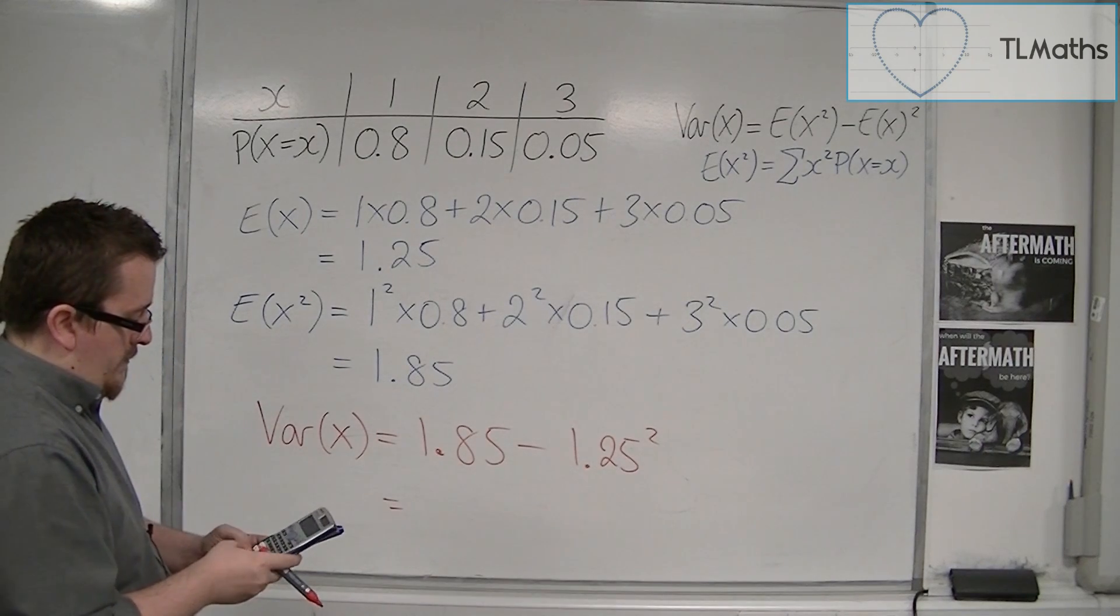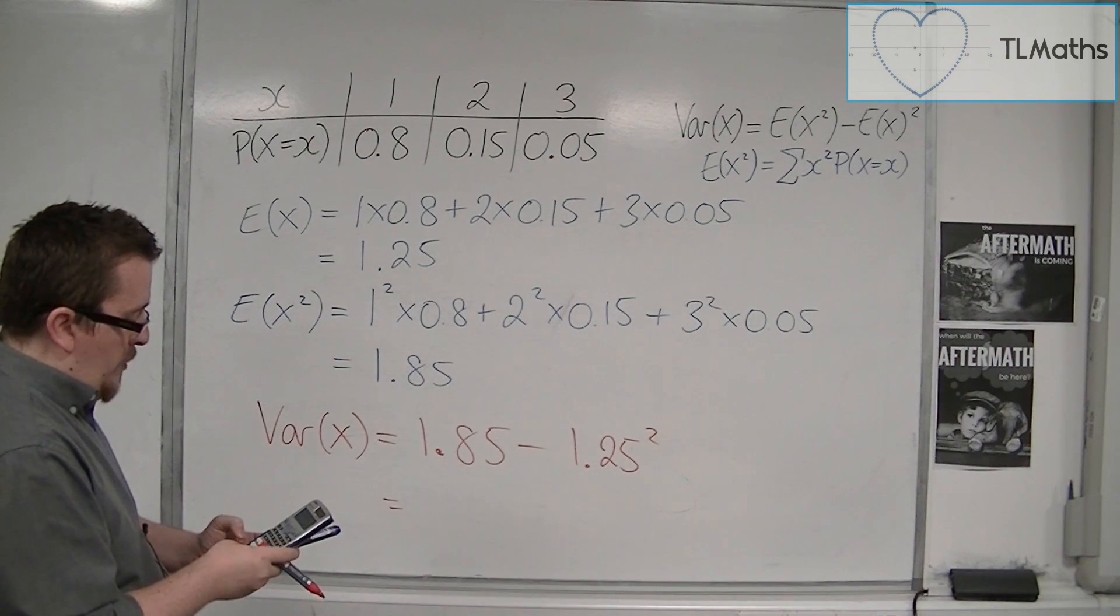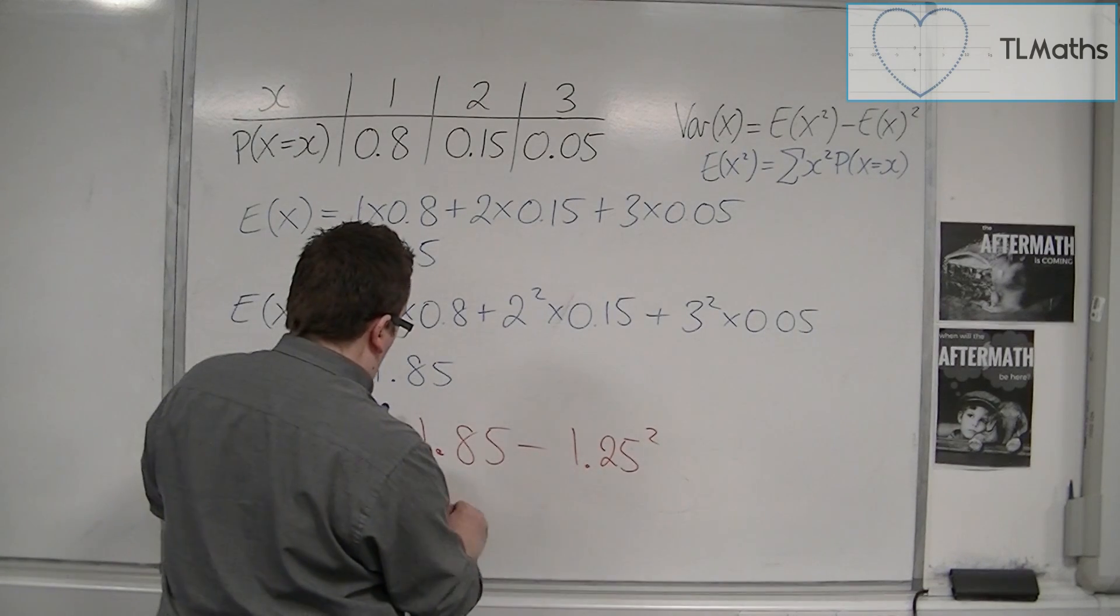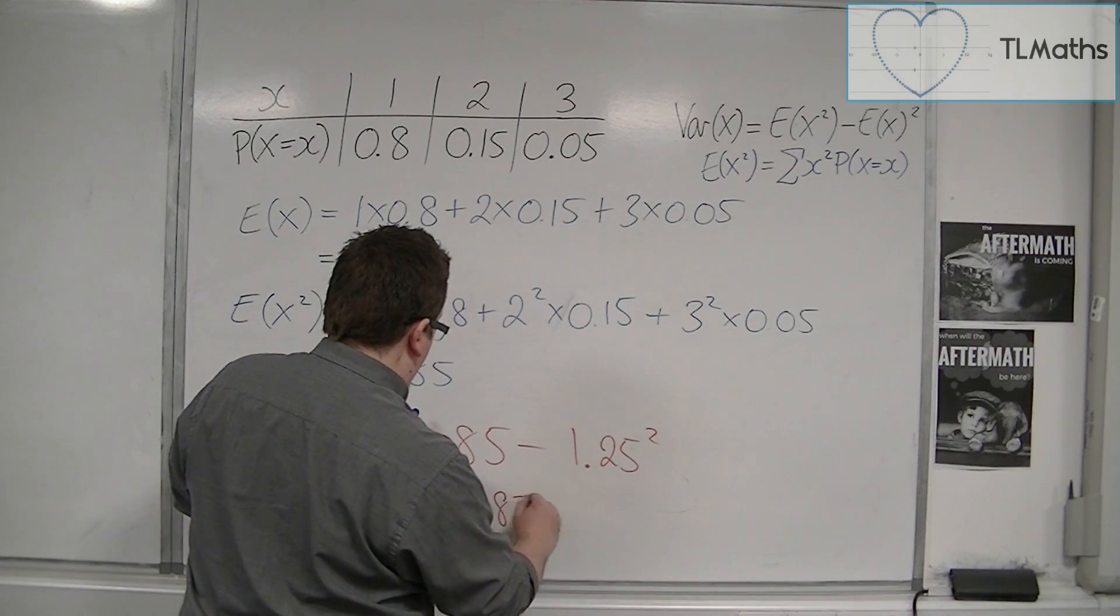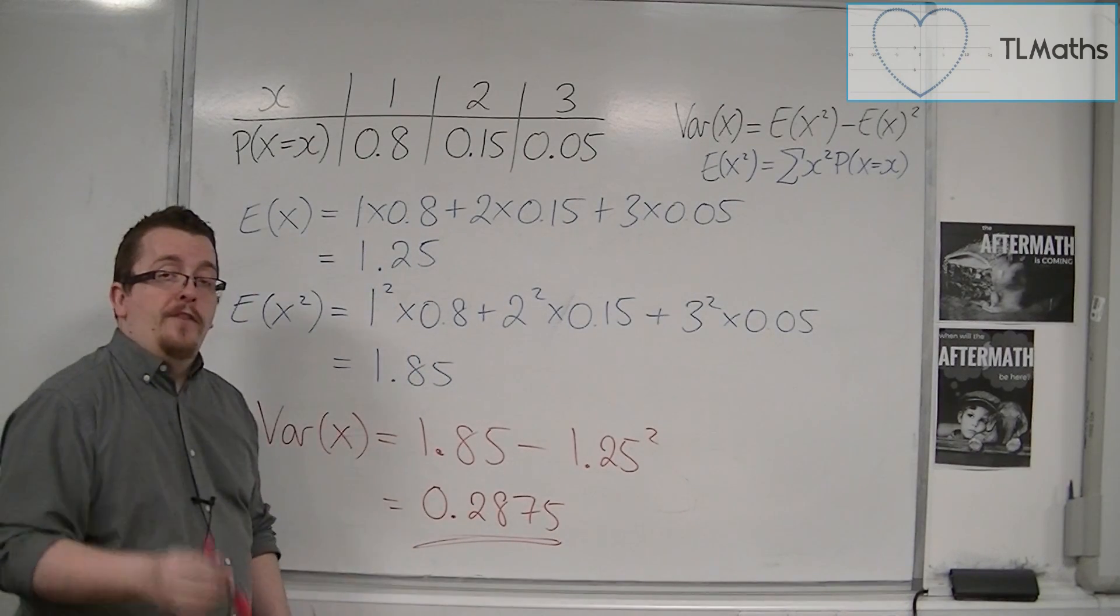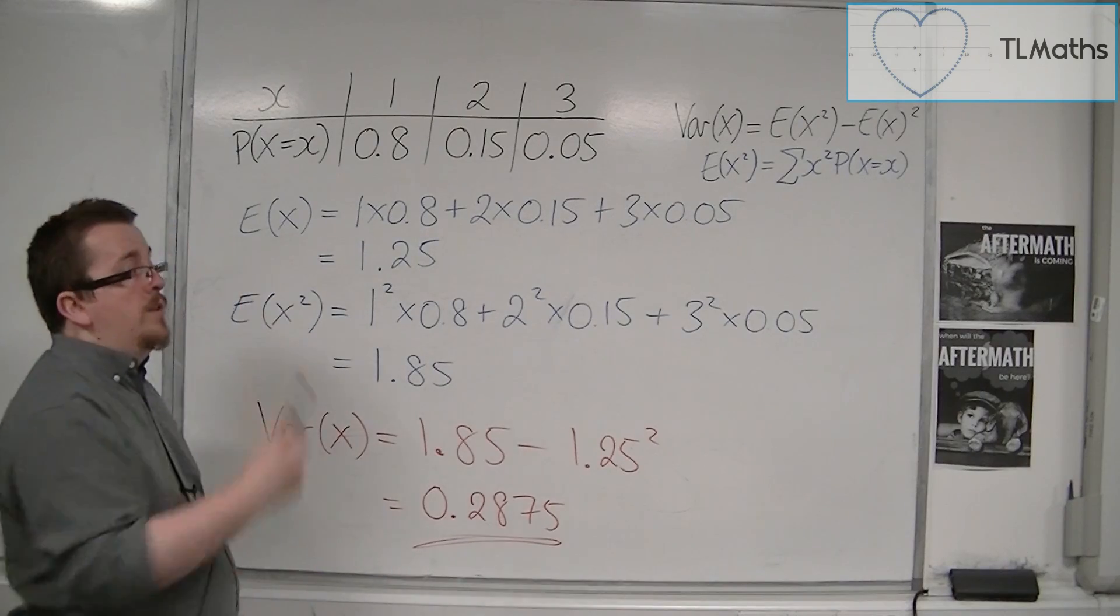1.85 take away 1.25 squared is 0.2875. And that is the variance of the discrete probability distribution that we had.